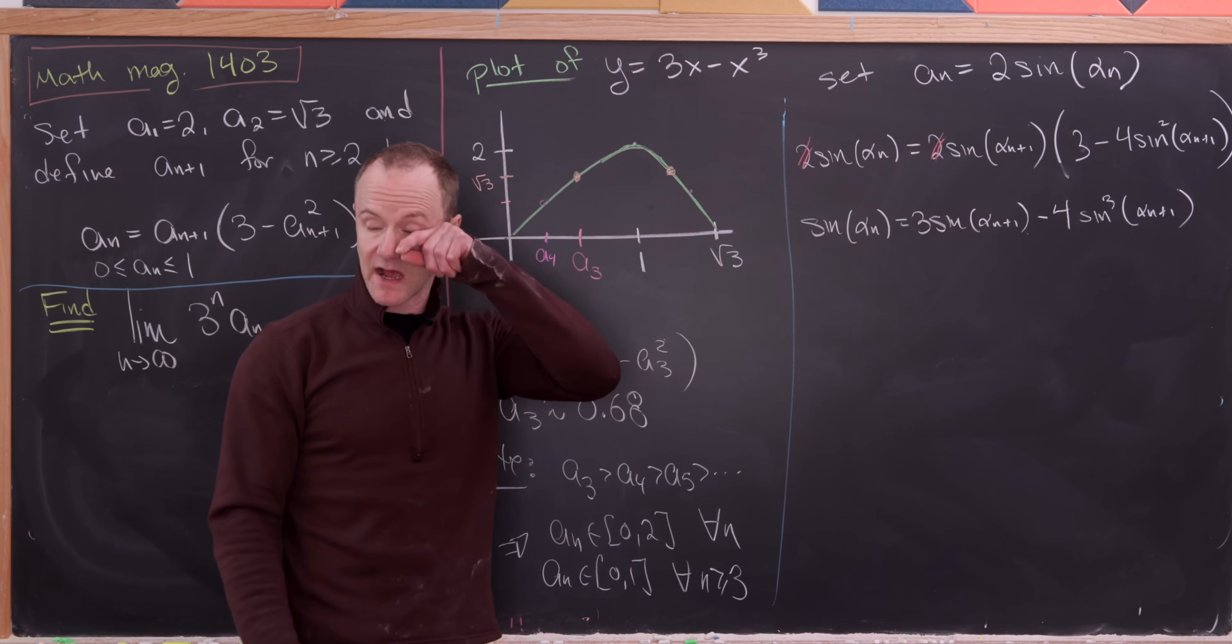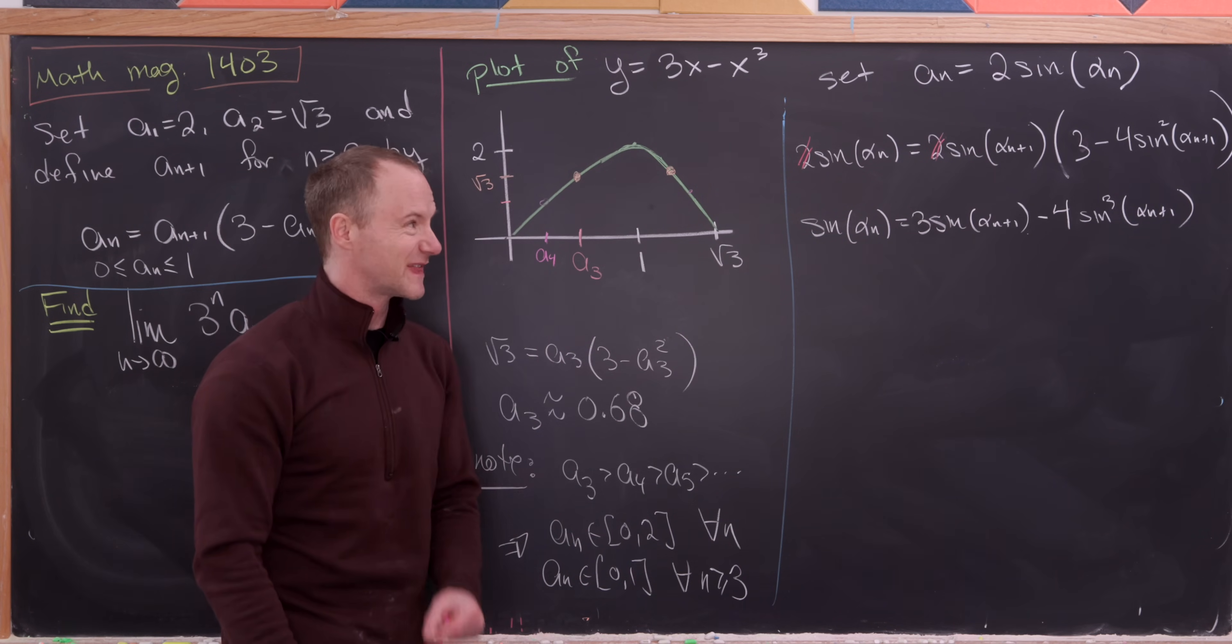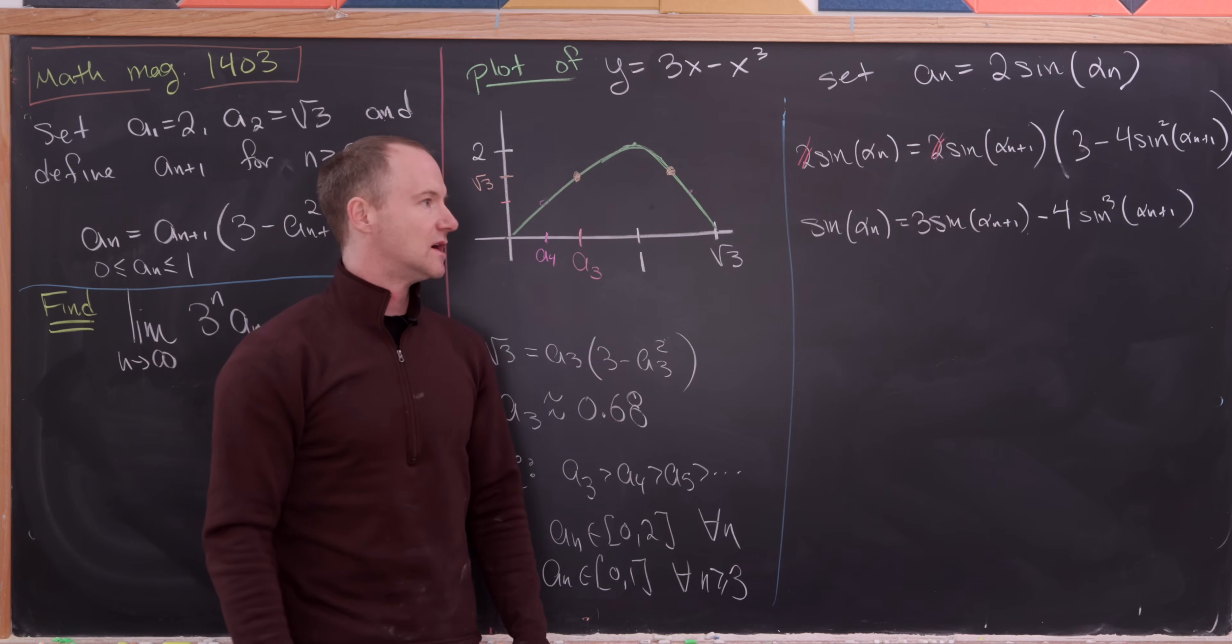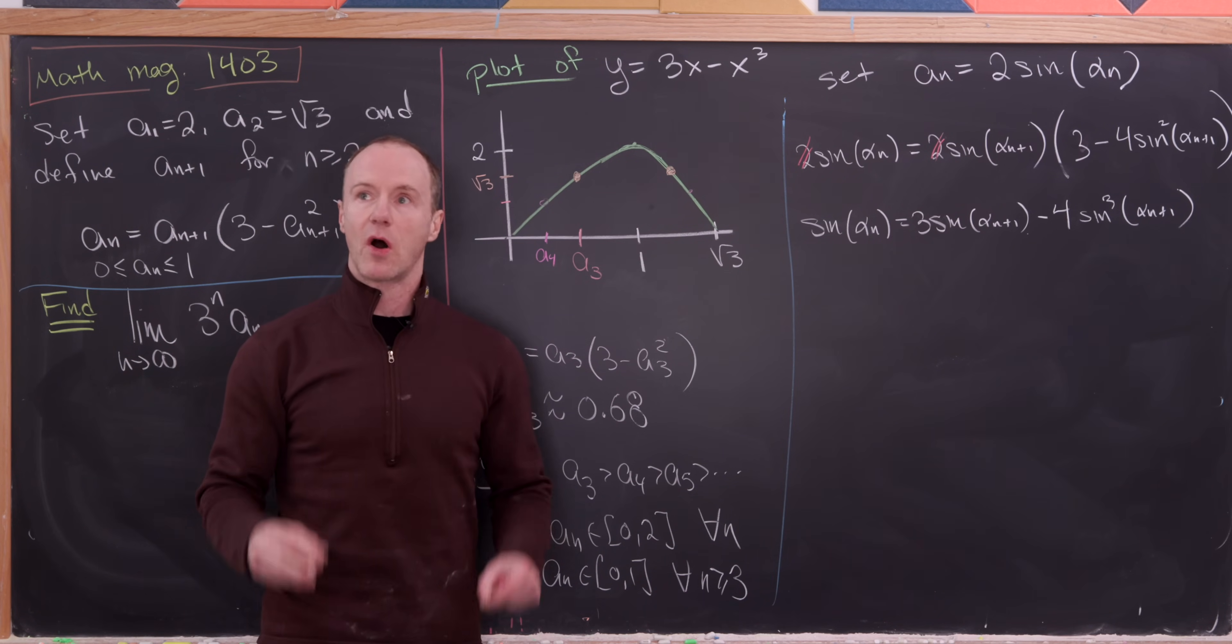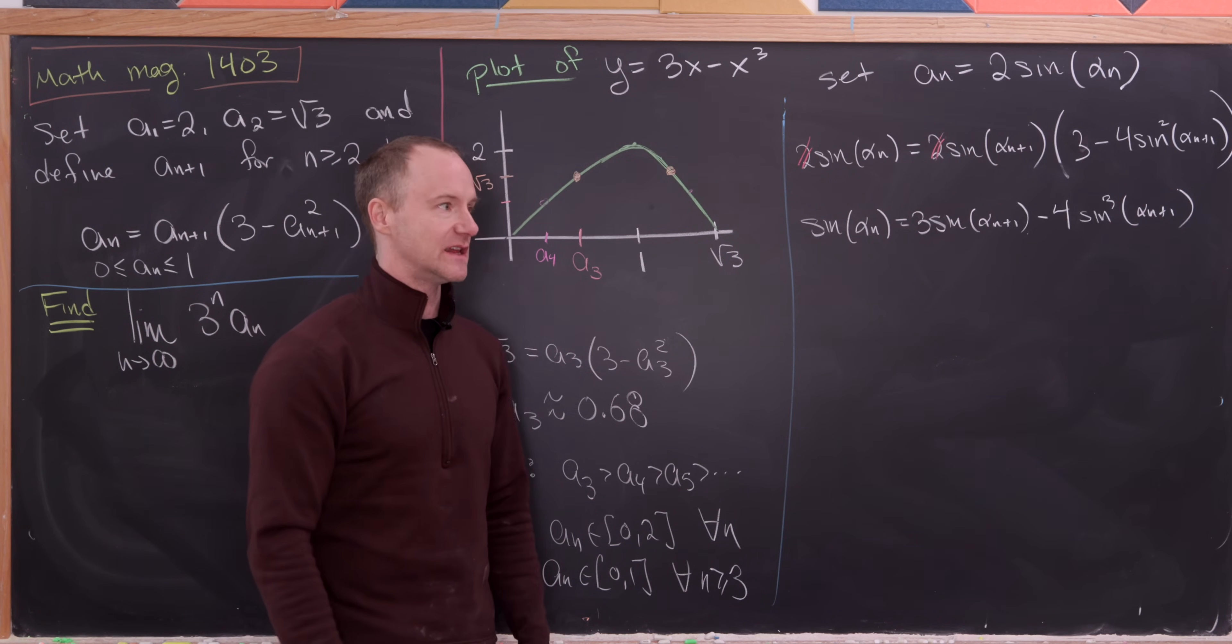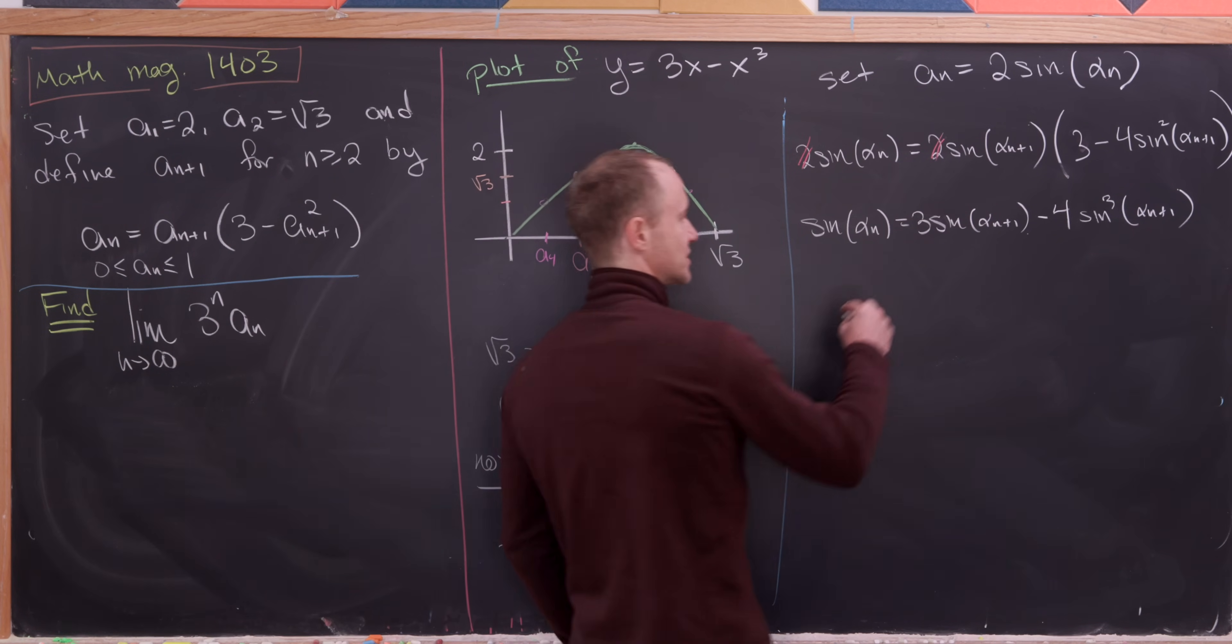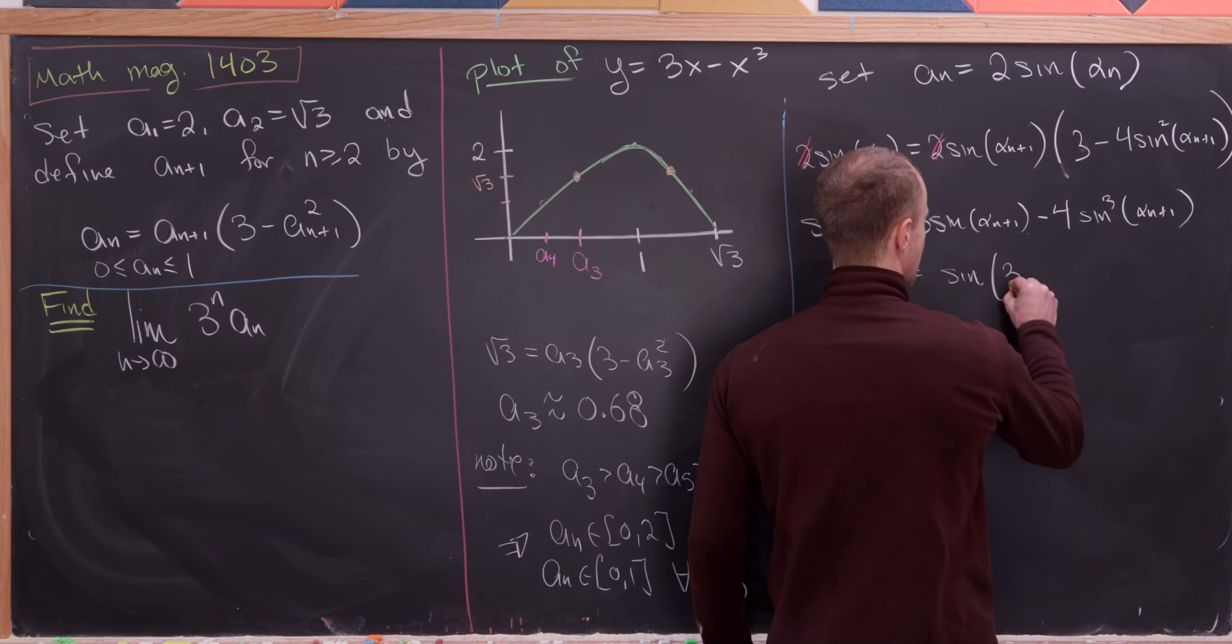But now that right hand side, it may or may not look familiar, but that's in fact the triple angle identity or part of the triple angle identity for the sine function. This actually simplifies to the sine of 3 alpha n plus 1.